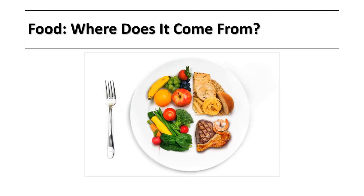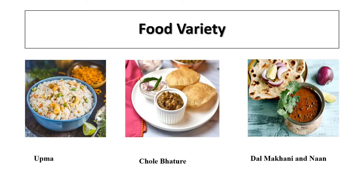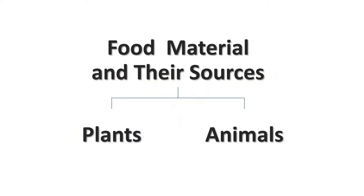We will start our topic: Food — Where Does It Come From? We live in India, and in our country there are some famous states with their own dishes, such as Punjabi dal makhani, Gujarati dhokla, and UP's chole bhature. The major sources of various food ingredients are either plants or animals.